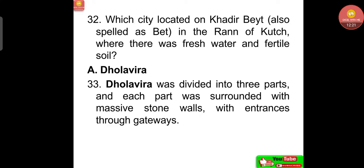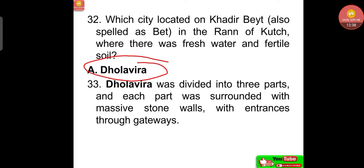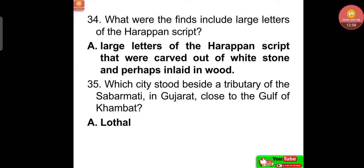Dholavira is located on Khadir Bet in the Rann of Kutch, where there was fresh water and fertile soil. It was divided into three parts, each surrounded by massive stone walls with entrances through gates. Large letters of the Harappan script were carved out of white stone and perhaps inlaid in wood.